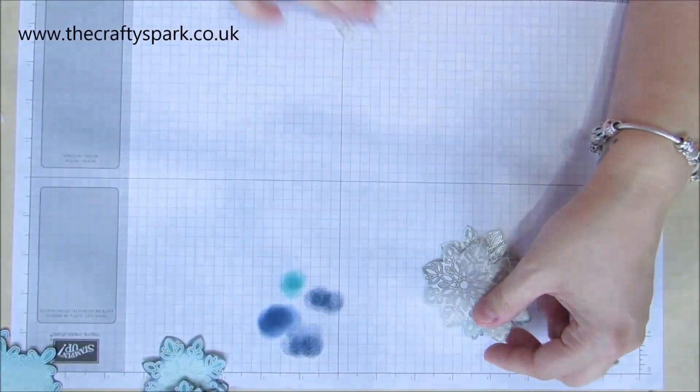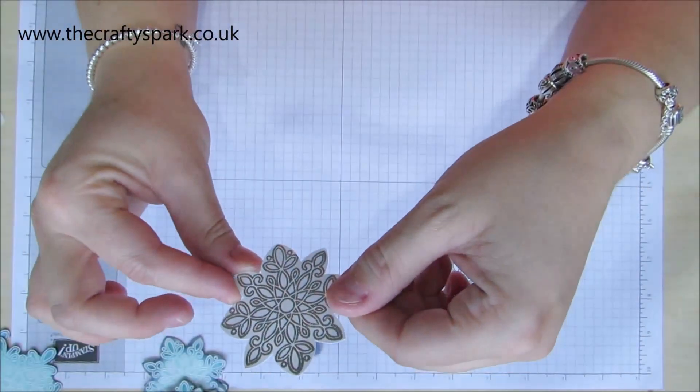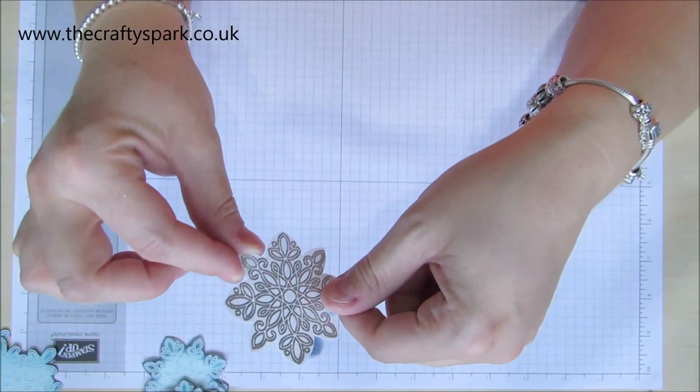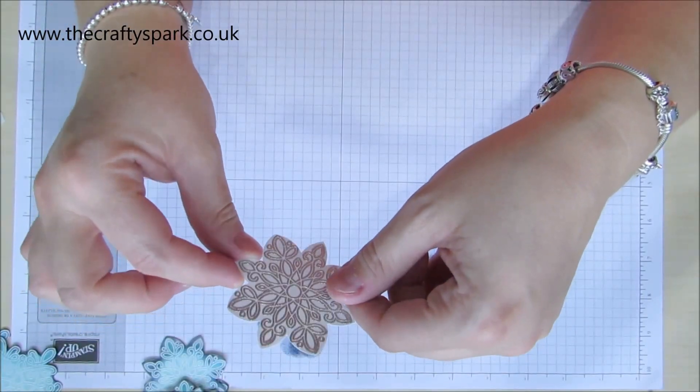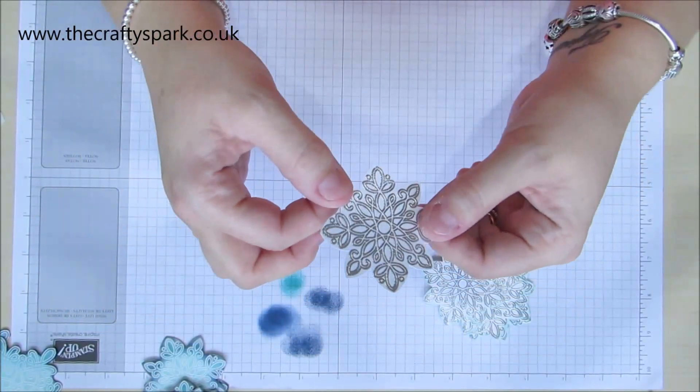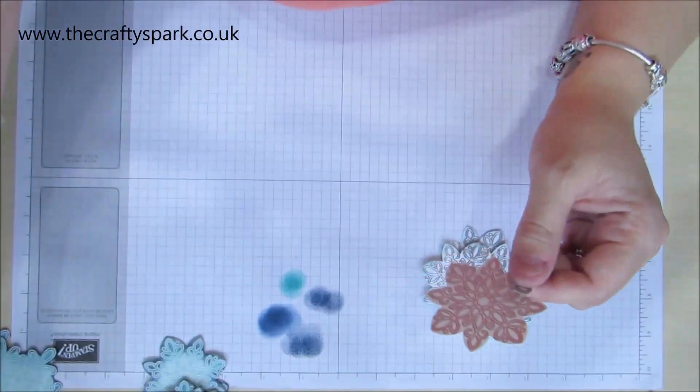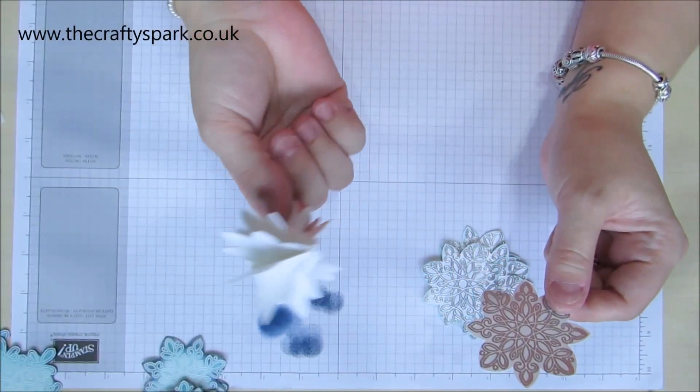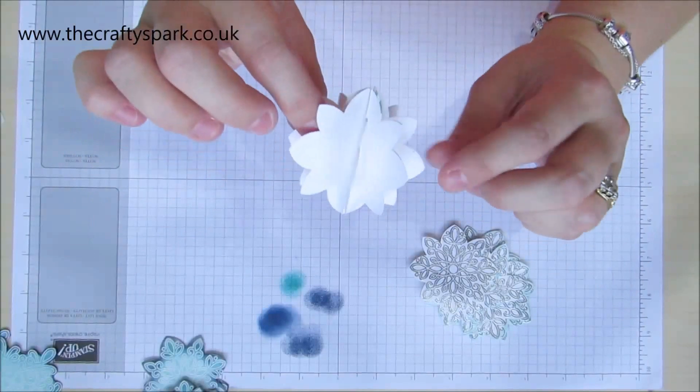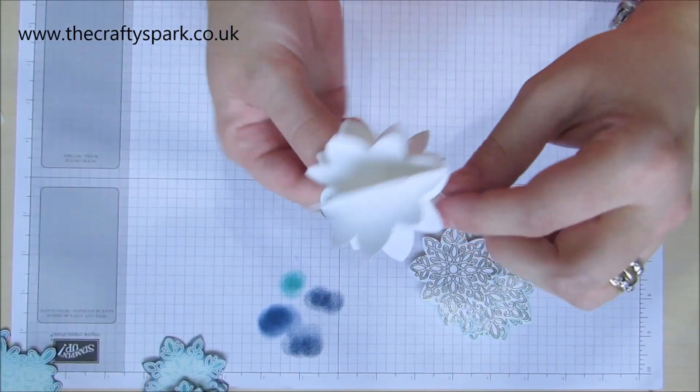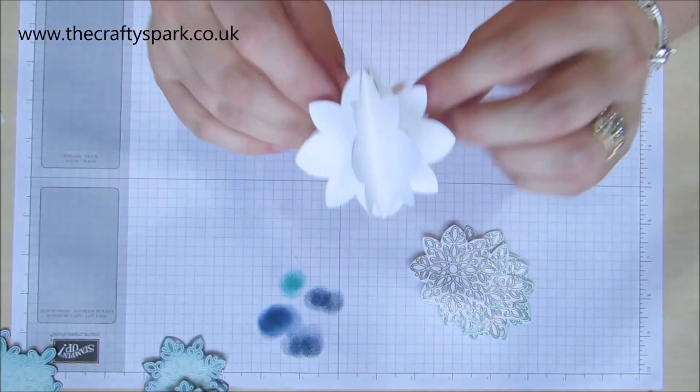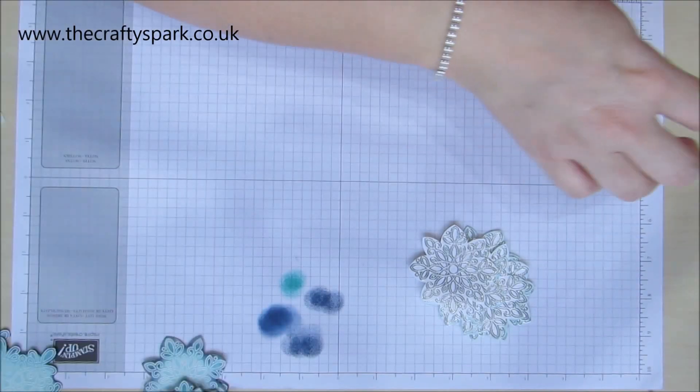These ones I've embossed with the silver embossing powder. How pretty does that look? Isn't that lovely? I'm actually going to make these into some hanging decorations as well later. I've already started them. This is one of my prototypes—just punched out lots of shapes, stuck them together, and I think that is going to look beautiful. That's going on to one of the Christmas banners that I'll be doing soon.